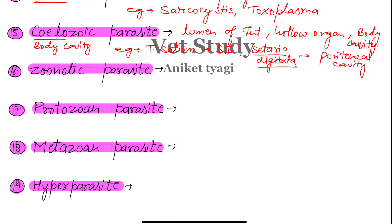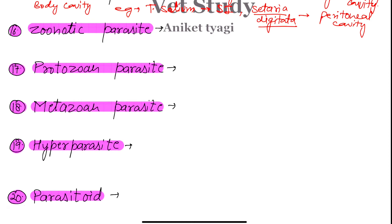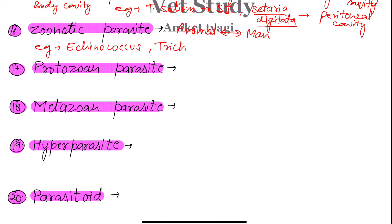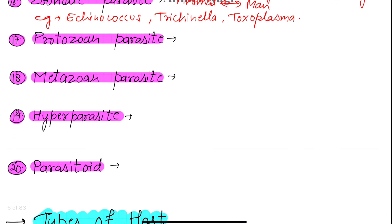Next we have the zoonotic parasite. Zoonotic parasites are those parasites which basically transmit from animal to man or vice versa under natural conditions. These are very important parasites. Examples of zoonotic parasites are Echinococcus, Trichinella, and Toxoplasma.